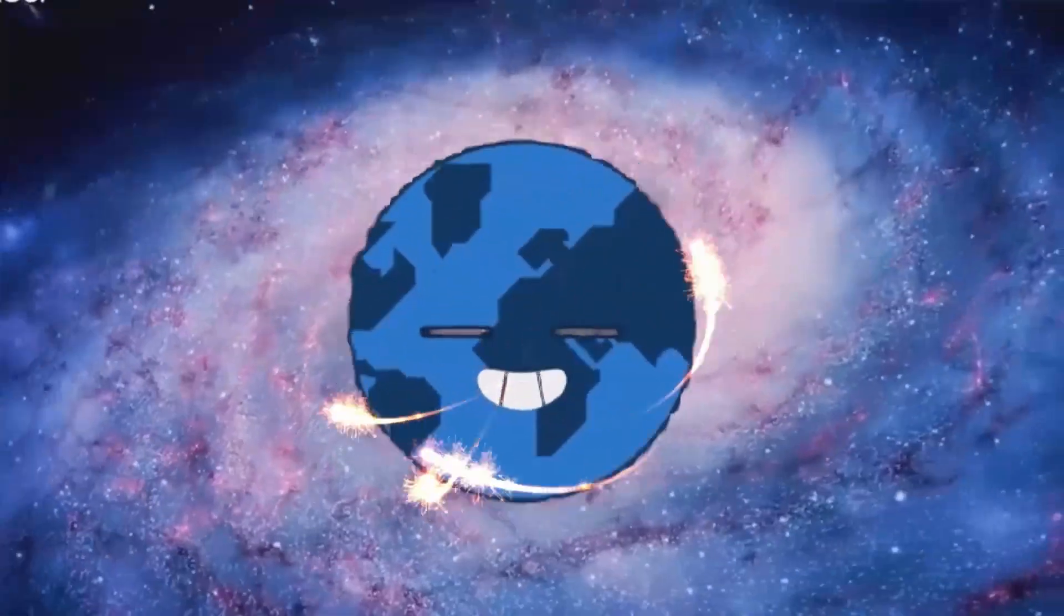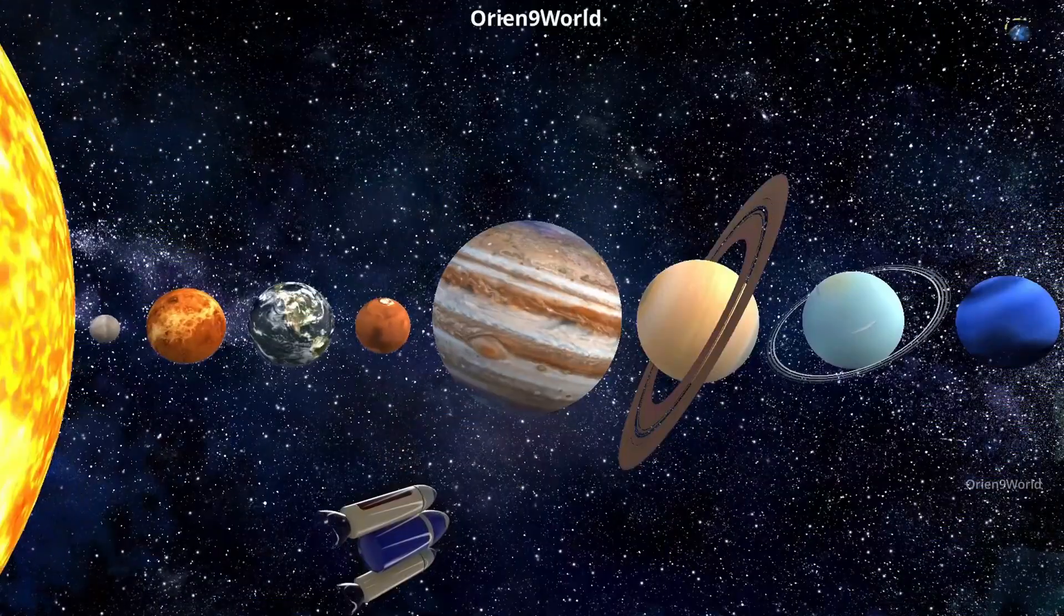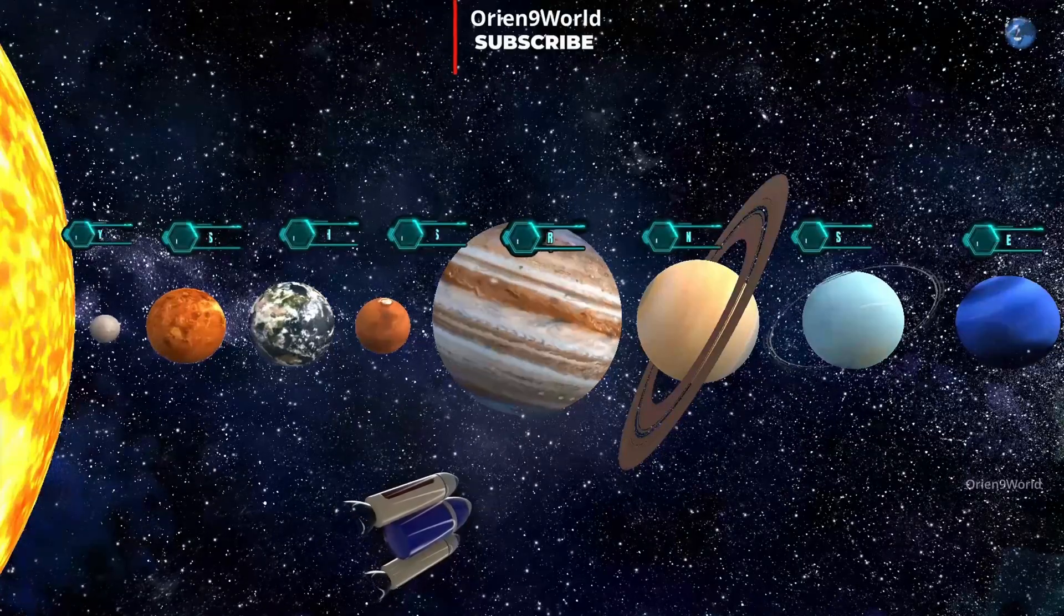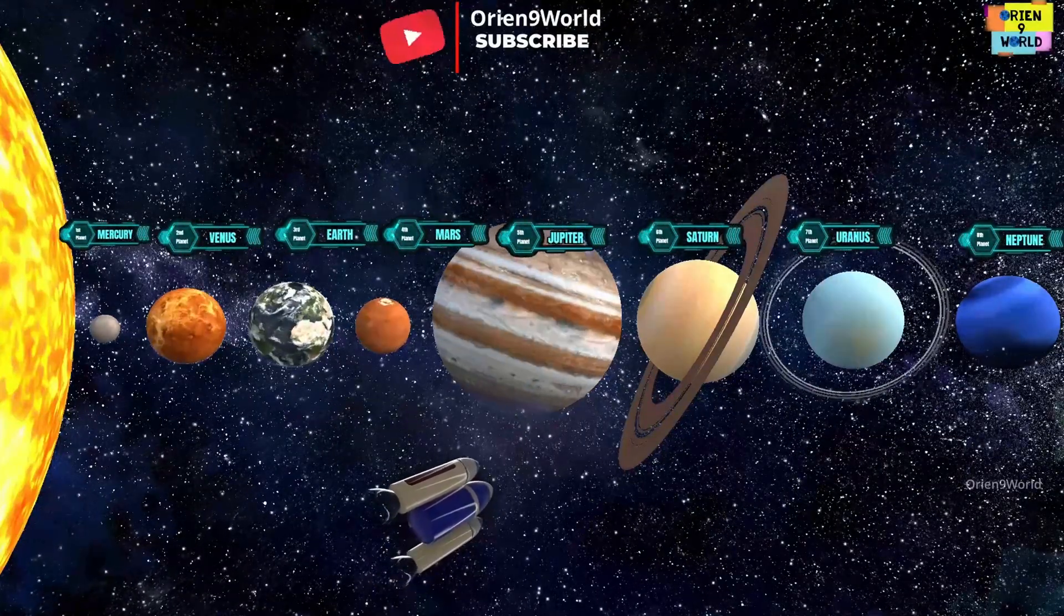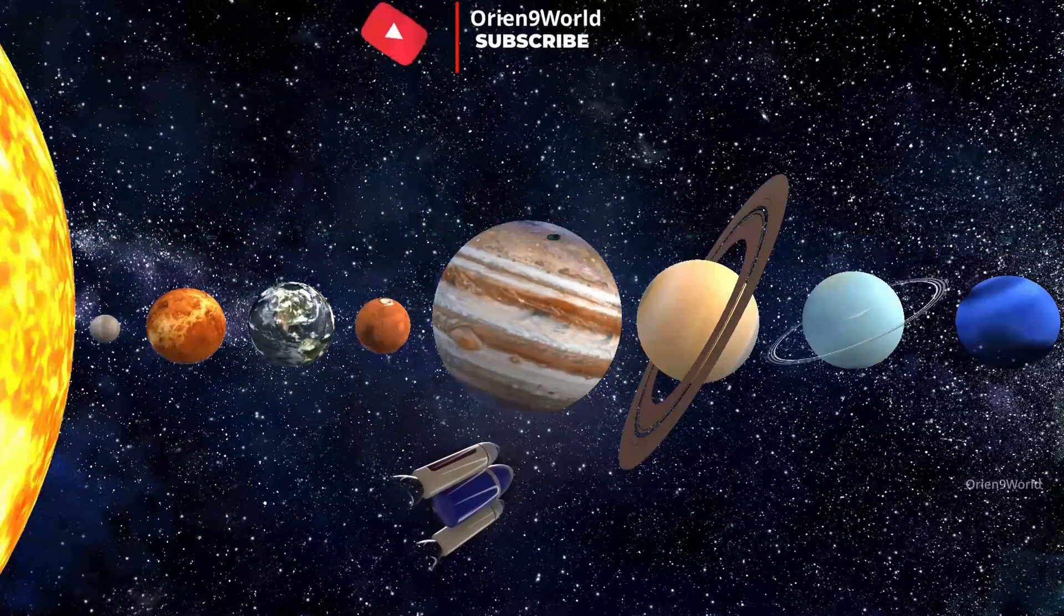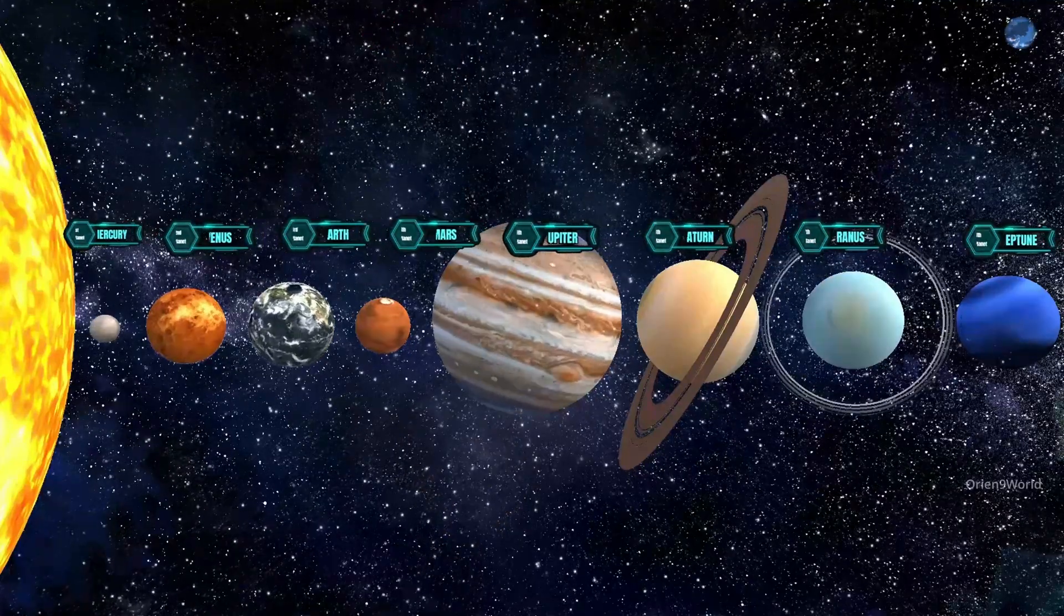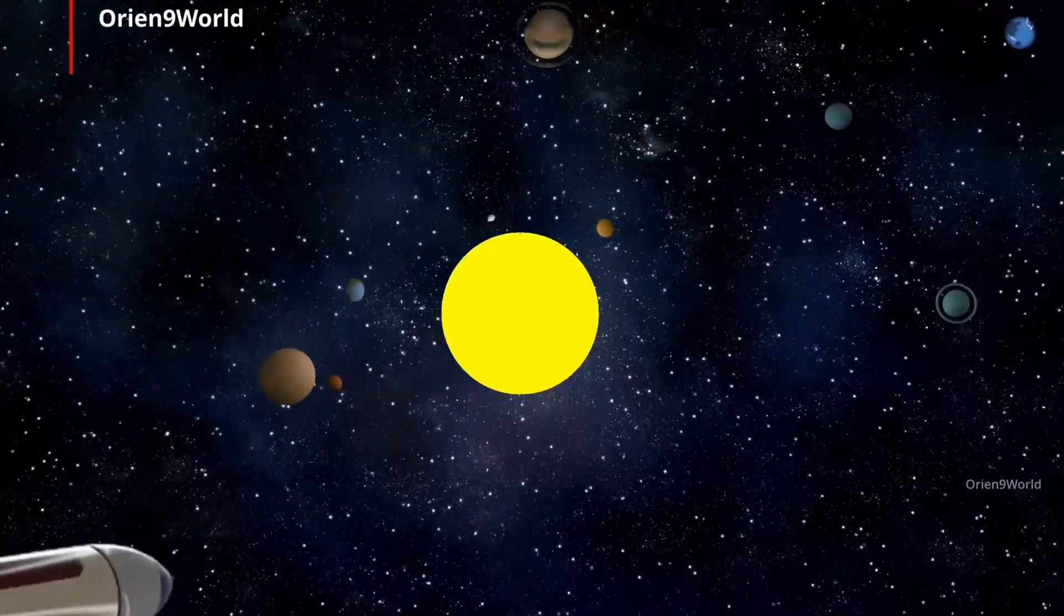There are eight planets in the solar system, we revolve around the sun. Join us to learn about the different planets, now sing along and have some fun.